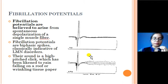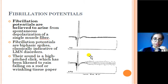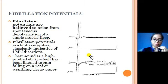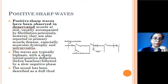A characteristic feature of these abnormal spontaneous potentials is the sound they make on the EMG software. The sound of fibrillation potentials is a high-pitched click, as if raindrops are falling on the roof or as if wrinkling tissue paper. We will now briefly discuss the second type of spontaneous potentials: positive sharp waves.